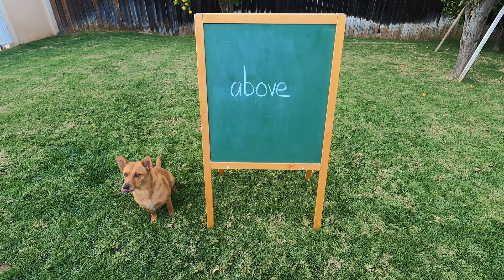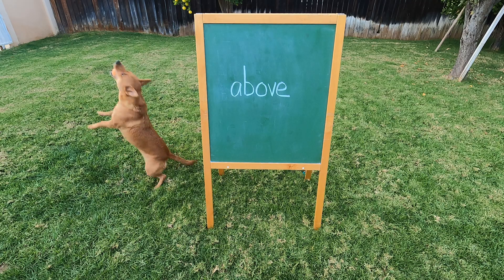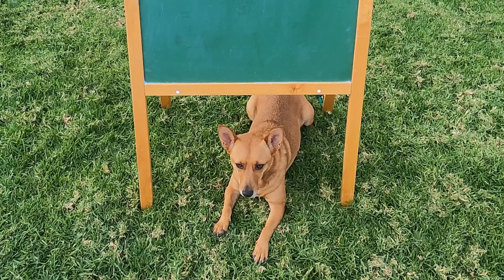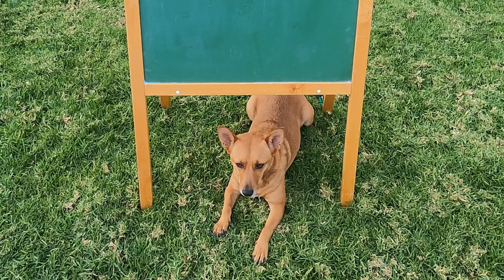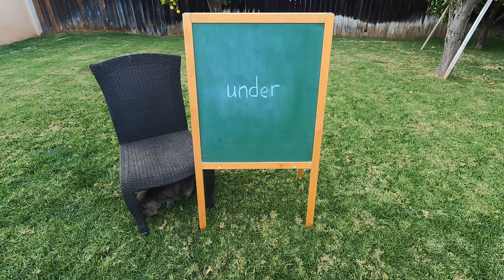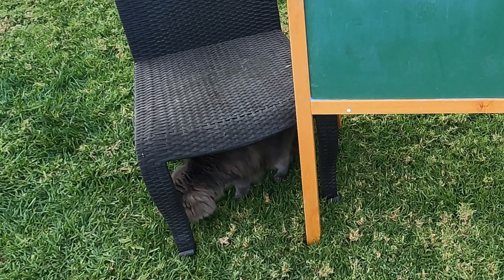Above — the ball is above Ginger. Below — Ginger is below the easel. Under — Axel is under the chair.